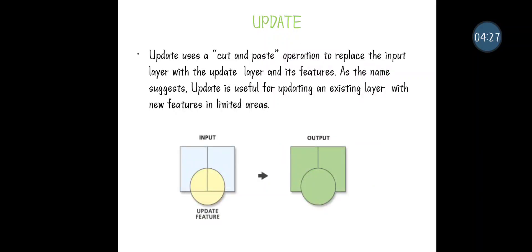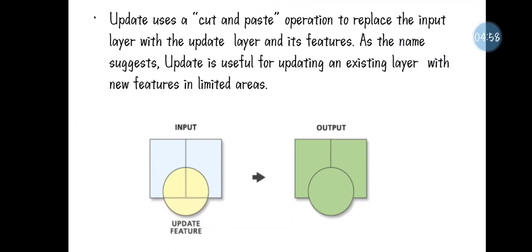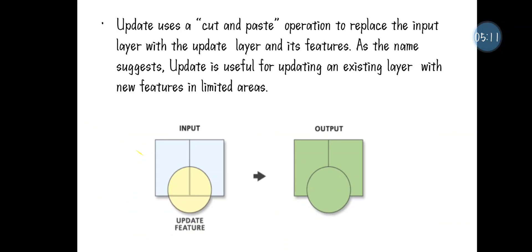The next one is Update, which is also similar to Append. But with Update, you specify at which particular area you are going to paste the data — it is similar to cut, copy, and paste. From feature layer one, you cut a particular area and merge it into input feature layer two. In the input, the blue area is the already existing data and the yellow region is the new data being updated onto it. The output combines both data together.